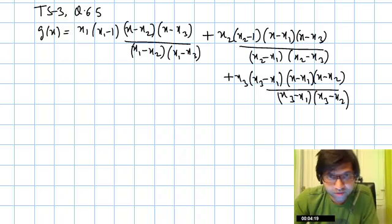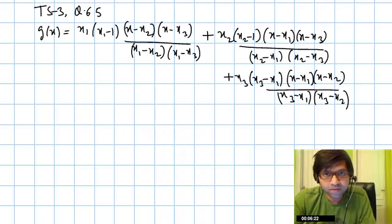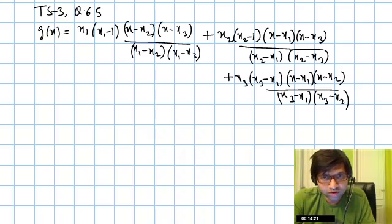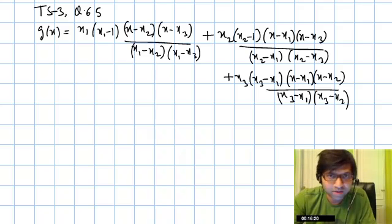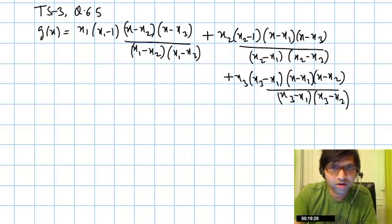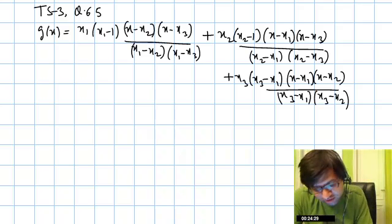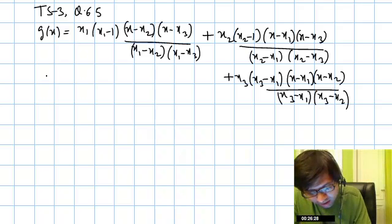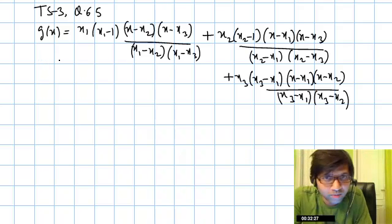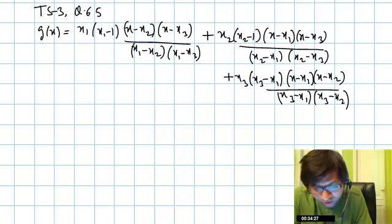This is question number 65, TS3 paper 1. I already discussed question number 64, so first go through 64. That's a passage type question, so go through 64 first and then you can listen to the 65th question. In 65th question, again like 64, g(x) is given and we have to find the simplified value of g(x). g(x) is a quadratic polynomial. We need to figure out what will be the simplified value of g(x).